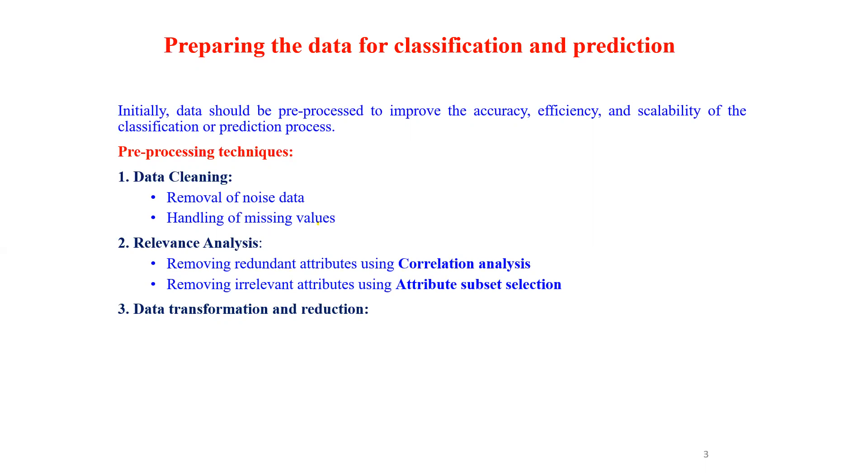Transformation and reduction of data involves two processes: normalization and generalization. Normalization is scaling values for a given attribute so that they fall within a small specified range. It can be applied on numeric data only. Familiar normalization techniques are min-max and z-score normalization.